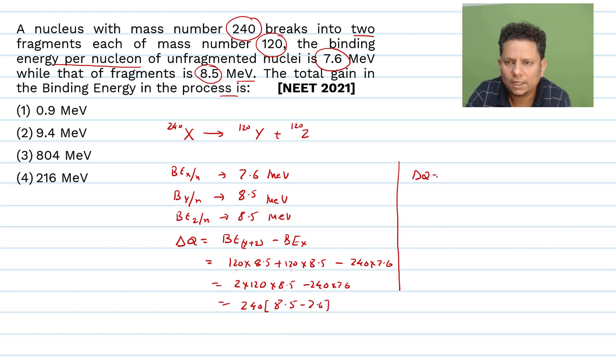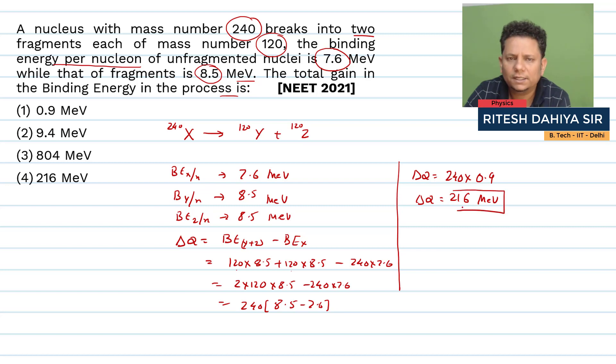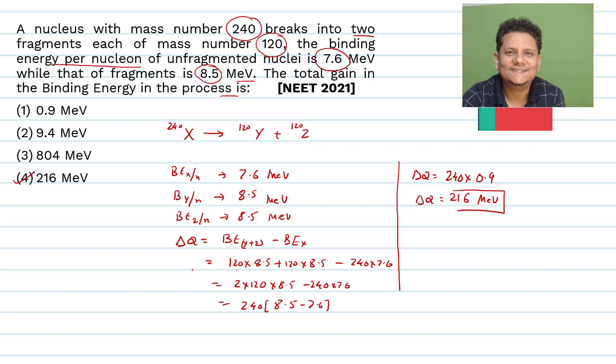When you multiply and simplify this calculation, you get 216 mega electron volt as your gain in binding energy. That means option 4, 216 mega electron volt, would be the right answer.